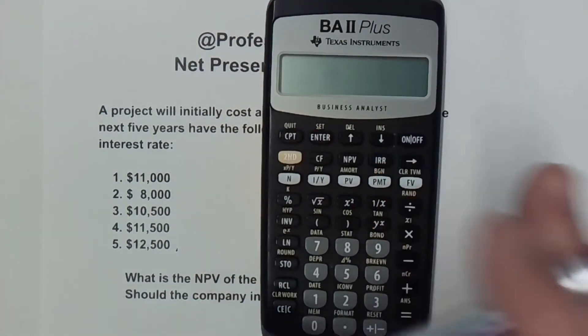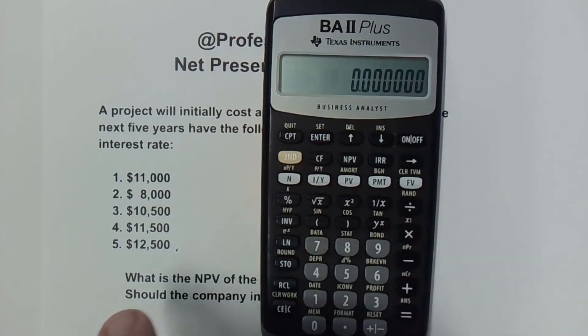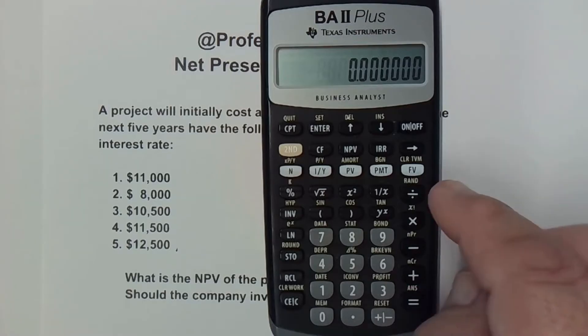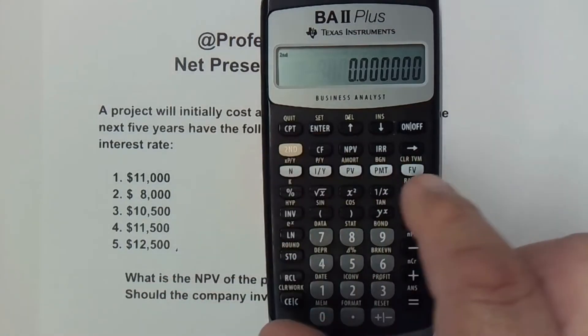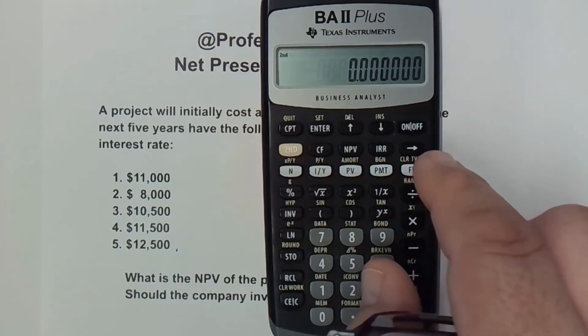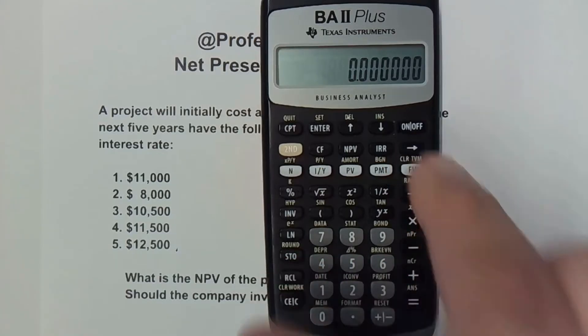The first thing that I want to do with my BA2 Plus is turn it on. And I always want to start out by clearing it out completely. The CCE button clears just the working memory, but we also need to clear out the time value of money. So I hit the second button and right above the future value, right above this white FV key, there's a clear TVM, which is clear time value of money.